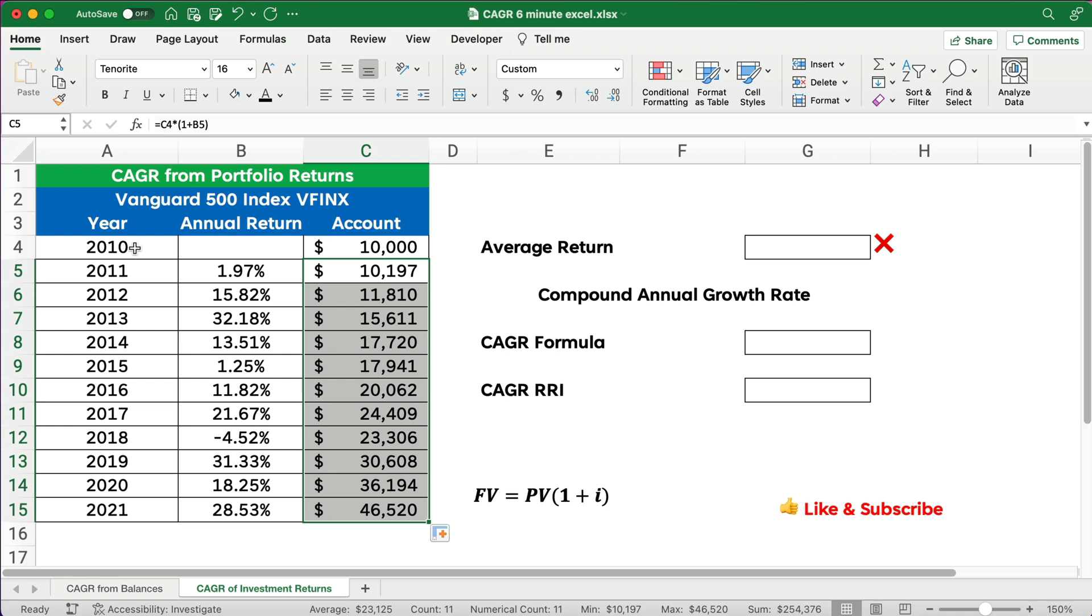So then we can copy this all the way down. So if we got all these returns, and these are actual returns over 11 years, actual returns. So if you put in 10,000 and you didn't touch it, then you had 46,520. And now in 2022, you're down, you know, like 22%. So you could do, what is the average return?